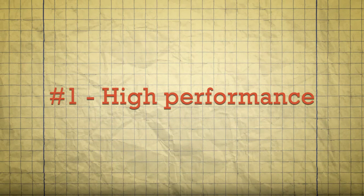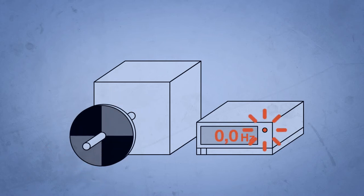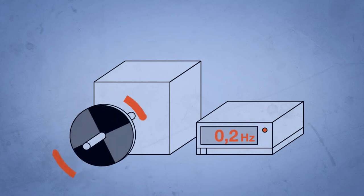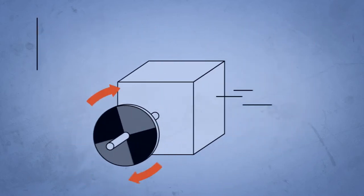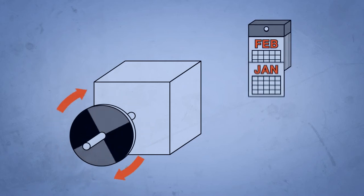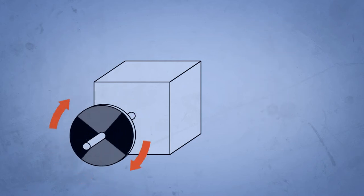InstaSpin FOC offers high performance and high stability, even at low speeds below 1 Hz. Even zero crossings are no issue, thanks to the advanced fast algorithms. No matter if the motor is operated in motor or generator mode, or if it's changing between both modes, InstaSpin FOC exhibits stable behavior in every situation.